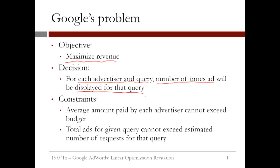Our constraints are of two types. Our first constraint is that the average amount paid by each advertiser, based on the number of times Google displays their ad for each query, cannot exceed the budget of that advertiser. Our second constraint is that the total number of ads we display for a query cannot exceed our estimate of the number of requests that we expect to see for that query.